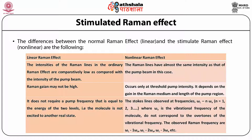While in case of nonlinear Raman effect, the Stokes lines are observed at frequencies omega_L minus N*omega_nu, where N = 1, 2, 3, etc., and omega_nu is the vibrational frequency of the molecule. These do not correspond to the overtones of the vibrational frequency. The observed Raman frequencies are omega_L minus 1*omega_nu, omega_L minus 2*omega_nu, omega_L minus 3*omega_nu, etc.